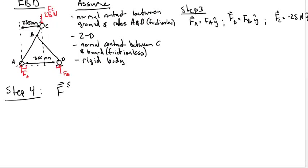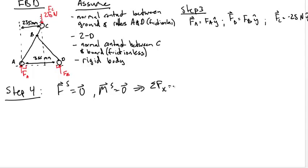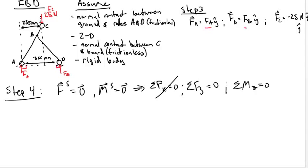For our equilibrium analysis, the resultant force on the system equals the zero vector and the resultant moment equals the zero vector. In two dimensions this gives us: sum of forces in X equals zero, sum of forces in Y equals zero, and sum of moments in Z equals zero. Looking at the external vectors in our free body diagram, none of them have X components. Therefore the sum of forces in X provides no useful information. We have two unknowns — FA and FD — and two equations: sum of forces in Y and sum of moments. Writing out the sum of forces in Y, we get the following equation.